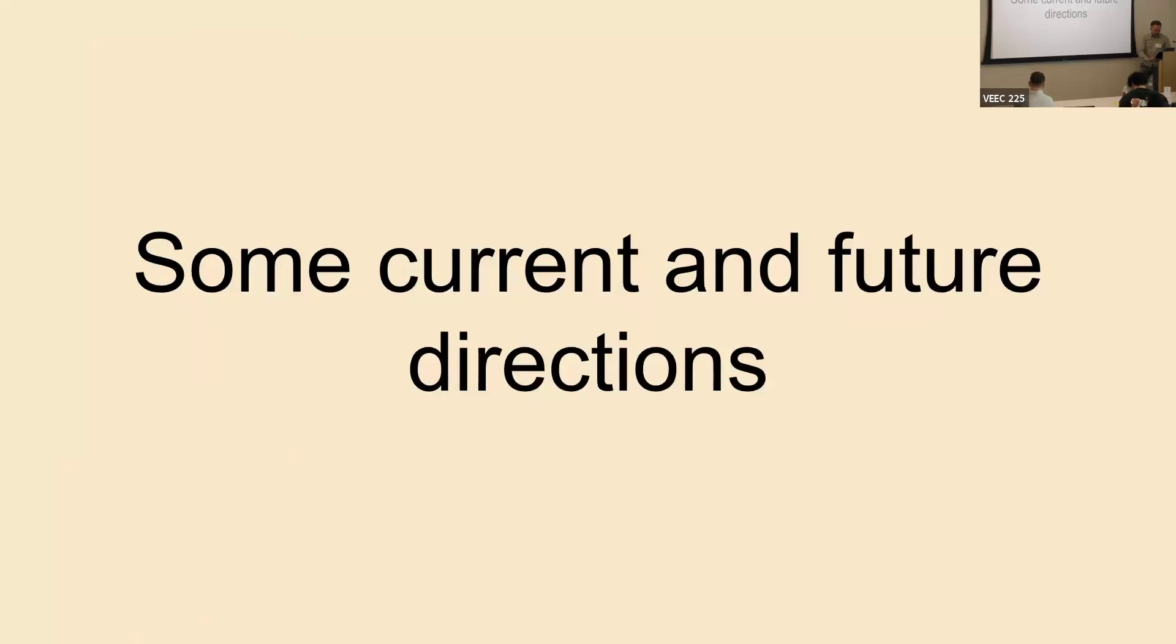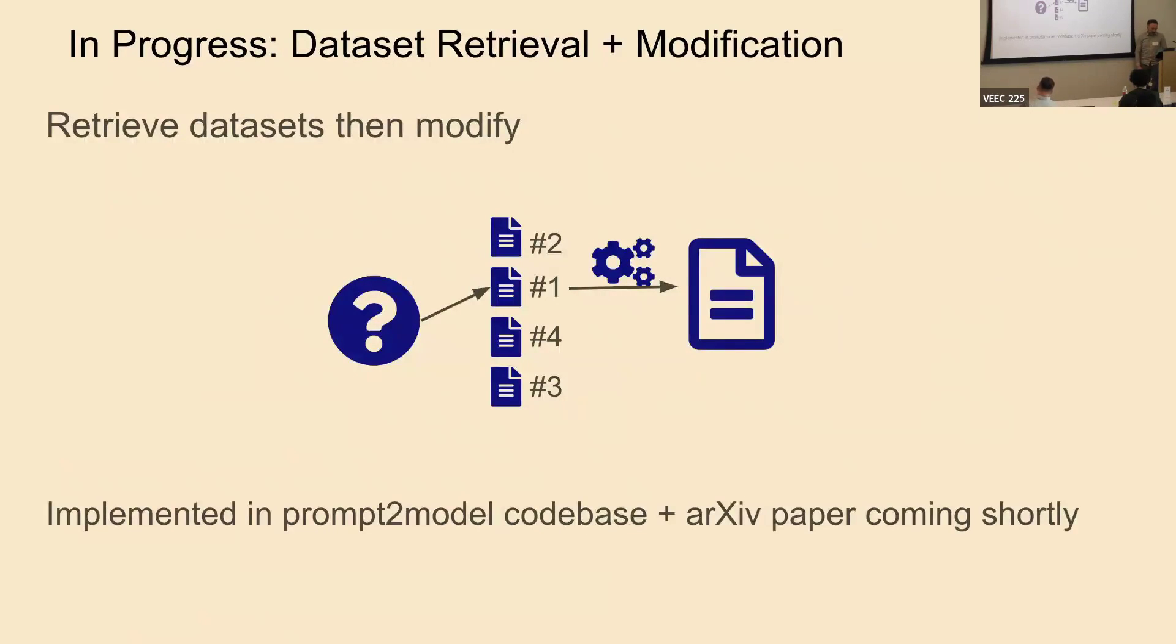There's some current and future directions. There's directions that we're working on now, and this one I'm pretty excited about. This is already in the Prompt2Model codebase, and we're going to have an arXiv paper shortly. The basic idea here is can we do data retrieval and then generation, or data retrieval and then modification. With the idea being that even if there's not a perfect dataset for what you want to be doing, there might be a dataset that's close enough that if you modified it into the appropriate format, you would be able to do better. We see pretty uniform improvements by doing this, where you retrieve a related dataset and then you modify it into the appropriate format. This can also possibly fix the Japanese to Python problem because you could retrieve English to Python examples but then translate them to Japanese.